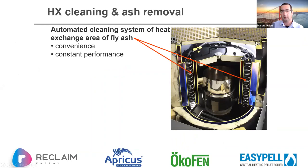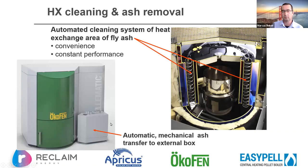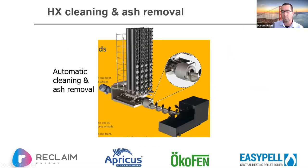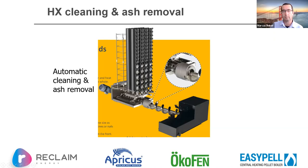Heat exchangers are cleaned by a reciprocating spring system that moves up and down with a clang, dropping fly ash that has built up. Ash is then mechanically transferred to an external box. The Etta boiler is very similar in this regard. In the Ökofen context, turbulators go all the way up, providing turbulence and cleaning so any fly ash that settles is knocked back down, then augered out to an external box.